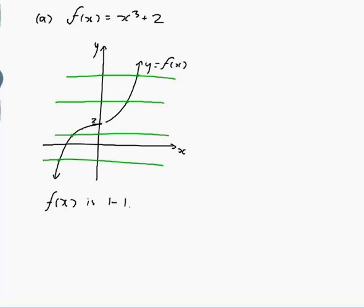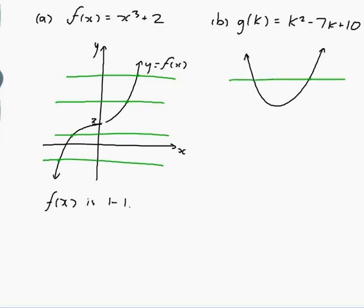Part B. g equals k squared minus 7k plus 10. That's a parabola. I don't really care where it is. The graph will look something along the lines of this. It points upwards because the coefficient of k squared is positive. My horizontal line test most definitely fails because here's a horizontal line that cuts it twice.